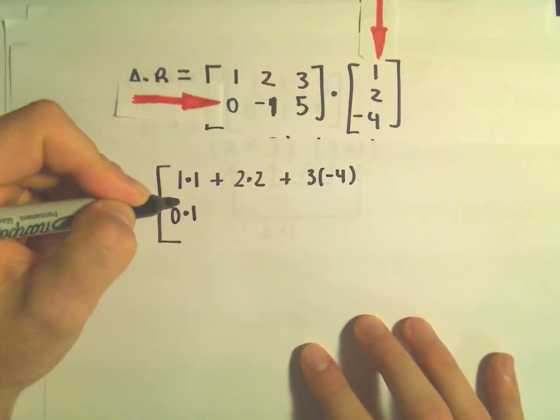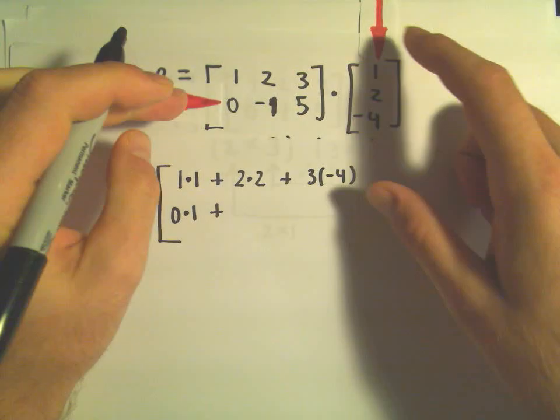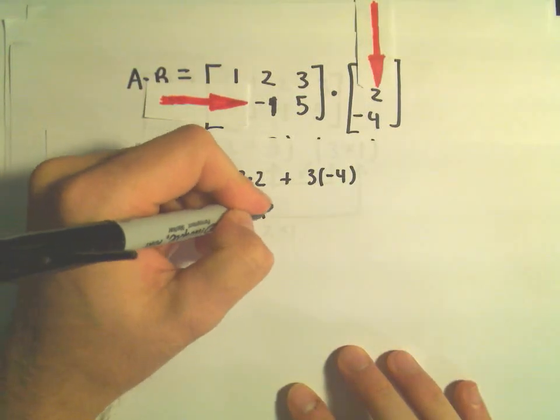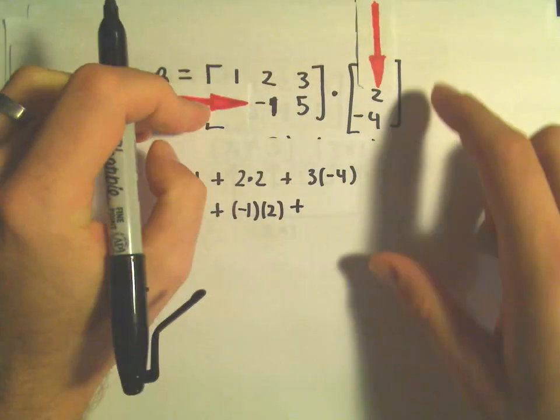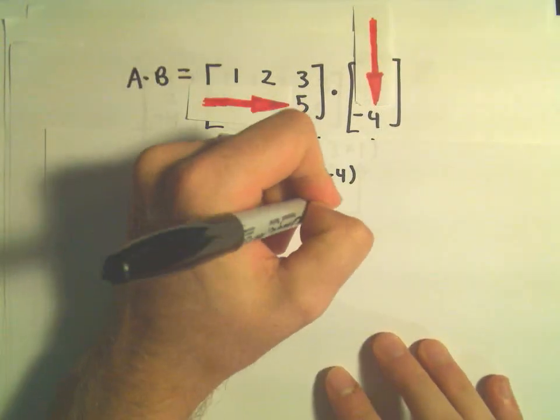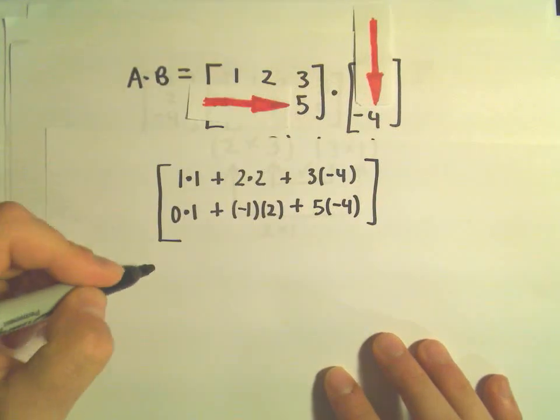So I'm now going to move to the second row and just repeat this process. I'm going to take 0 times 1, plus, and again, I just move to the next entries. I'm going to take negative 1 times 2, plus, and again, I move to the next entries, which will be 5 times negative 4.